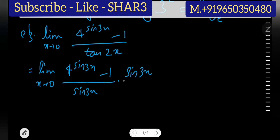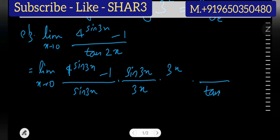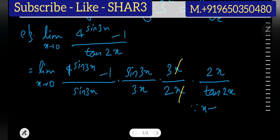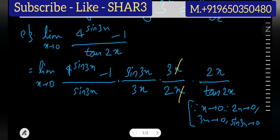To balance sin3x, we divide by 3x (the angle) — this form was discussed in earlier videos of the limit recapitulation series — so we divide by 3x and also multiply by 3x. For the tangent 2x in the denominator, we introduce 2x accordingly. Note that as x approaches 0, both 2x and 3x approach 0, and sin3x also approaches 0.